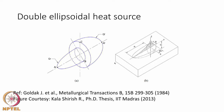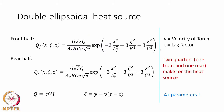The most popular heat source used by commercial welding software is the so-called double ellipsoidal heat source. Essentially, two ellipsoids are taken and half of each is combined to form the double ellipsoidal heat source. This has been one of the most highly cited publications in the welding literature — almost more than 950 times — by Goldak et al., and the heat source is also called the Goldak double ellipsoidal heat source.